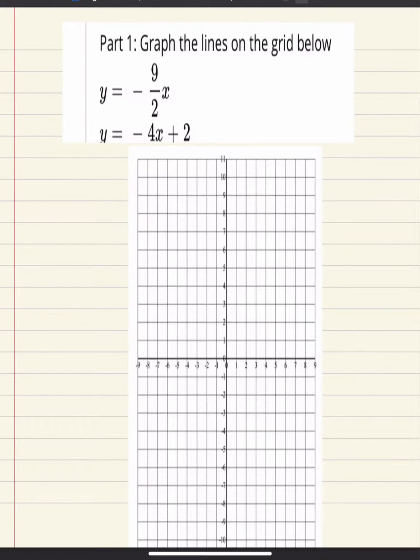Here we want to graph the lines on the grid below. So let's look at this first equation. Remember when you're in the form y equals mx plus b, the coefficient or number attached to the x is your slope, negative 9 halves.